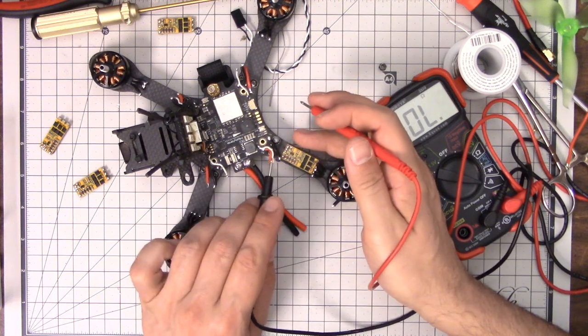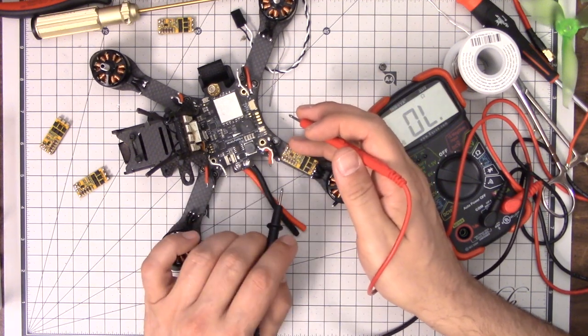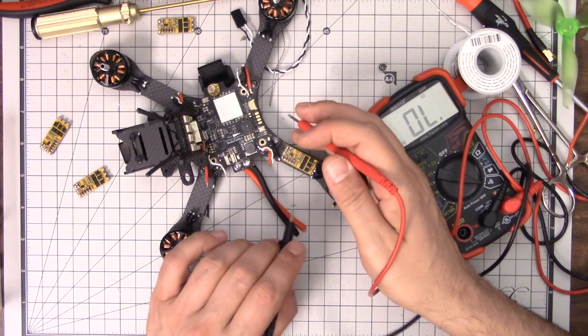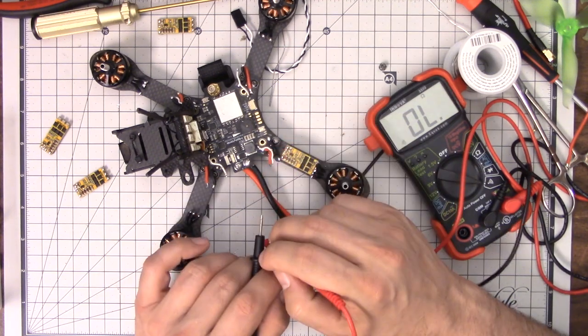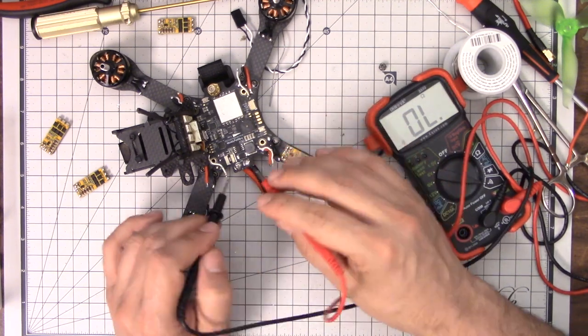What you have to do is you have to start desoldering things one at a time. And when you desolder the thing that's causing the short, the problem goes away. It's purely trial and error.